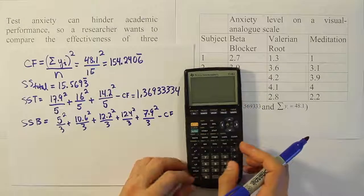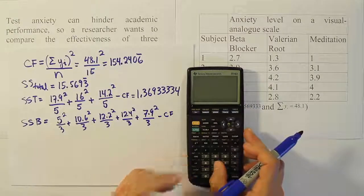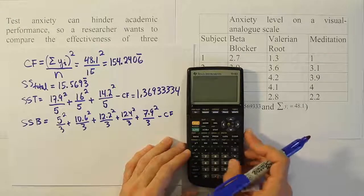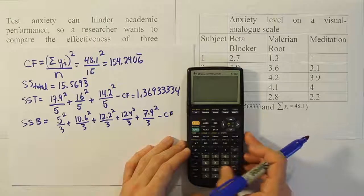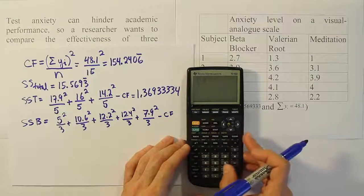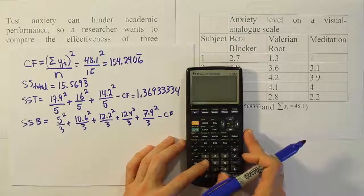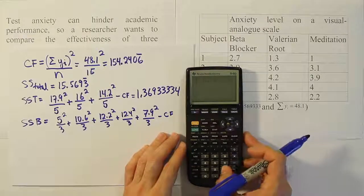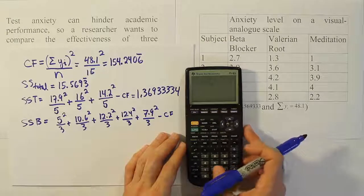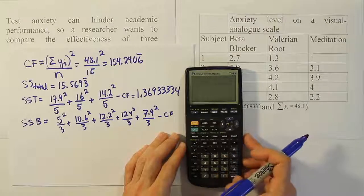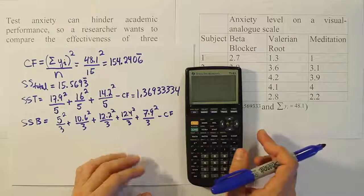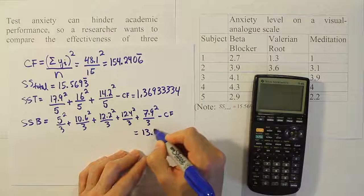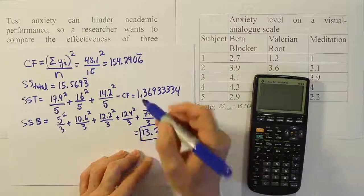It's a lot of work to do these calculations, but it's not too bad. So we compute: 25 ÷ 3 + 10.6² ÷ 3 + 12.2² ÷ 3 + 12.4² ÷ 3 + 7.9² ÷ 3, minus the correction factor of 154.2406 repeating. We end up with 13.216. So our sum of squares for block is 13.216.